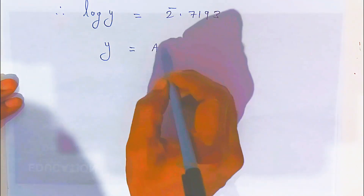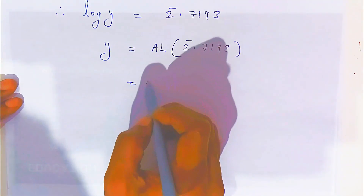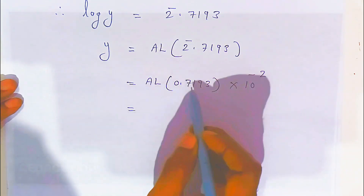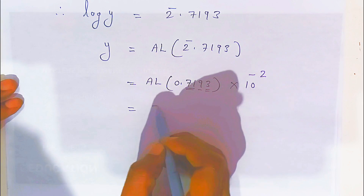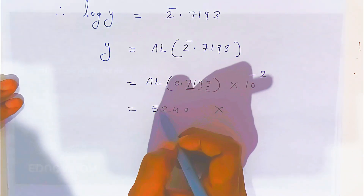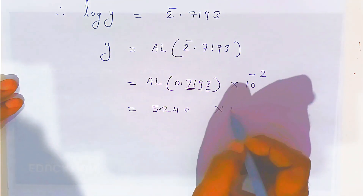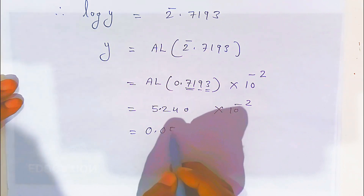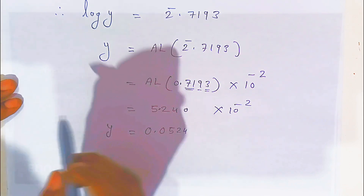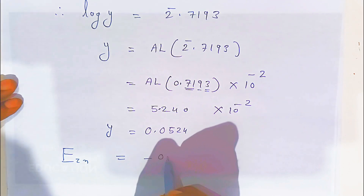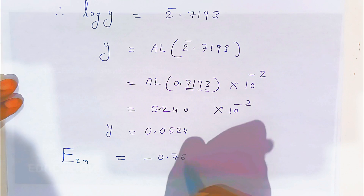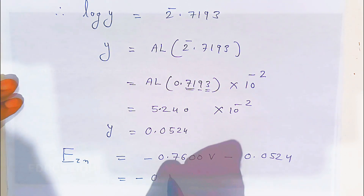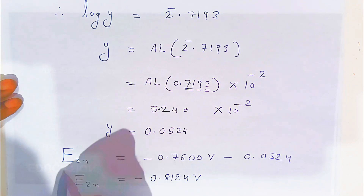Taking antilog: antilog of 2̄.7193. The antilog of 0.7193 from the antilog table (71, 9th column plus mean difference) gives 5240. The characteristic 2̄ means 10^(−2), so we divide by 100, placing the decimal before two digits: y = 0.0524. Substituting back: zinc potential = minus 0.76 volt minus 0.0524 = minus 0.8124 volt, approximately minus 0.824 volt.